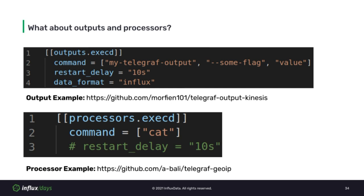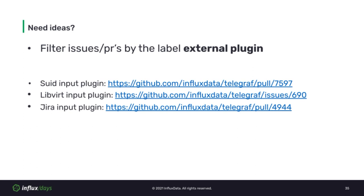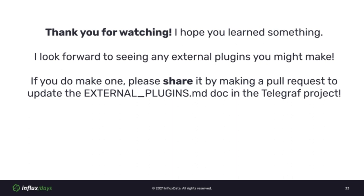Are you now excited to make an external plugin but don't know what for? Check out issues and pull requests within the Telegraph repository labeled with external plugin — these are great sources for ideas, marked by the team as good candidates and open to anyone interested. As of writing this, there are a total of 24 to look through. If you run into any trouble, please ask questions in the Slack community channel. Thank you for watching — I hope you learned something. If you do make a plugin, please share it by making a pull request to update the external plugins markdown document in the Telegraph project.